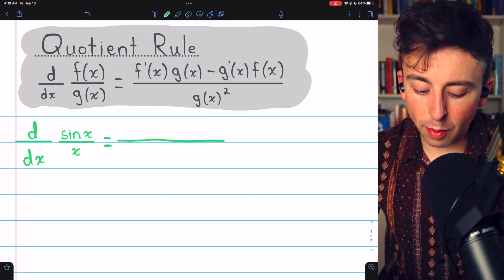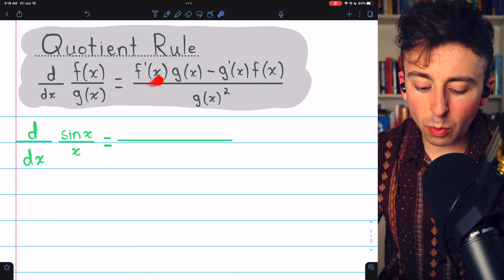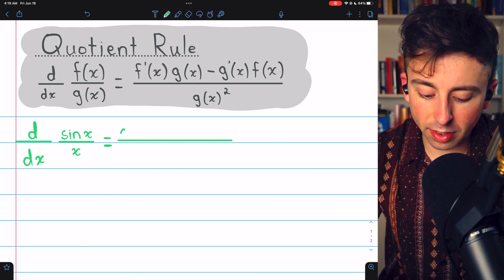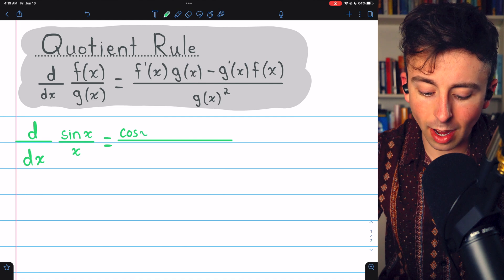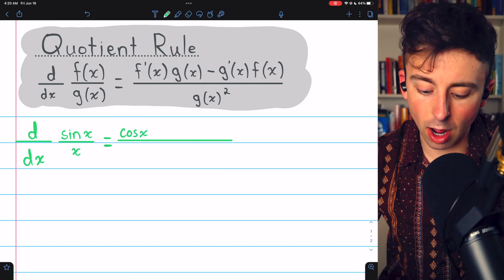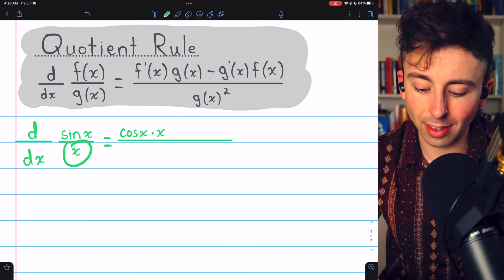For our function, f of x, the numerator, is sin x. So we begin with f prime, the derivative of sin. The derivative of sin x is going to be cosine x, and then we need to multiply that by g of x, the denominator. So we multiply by x, since that's the denominator.